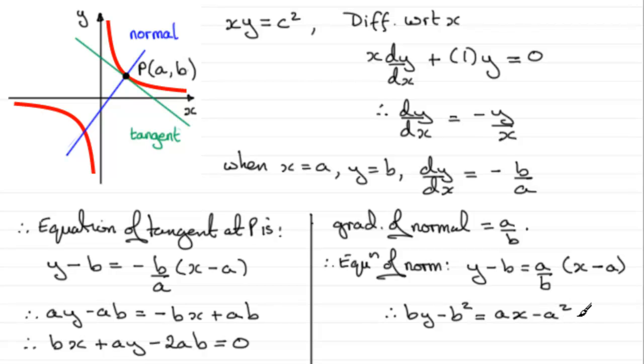Now I could rearrange this, just subtract BY from both sides and add B squared to both sides, so I end up with another version, AX minus BY minus A squared plus B squared, and that would equal zero.